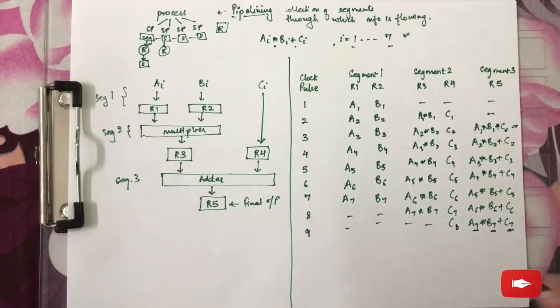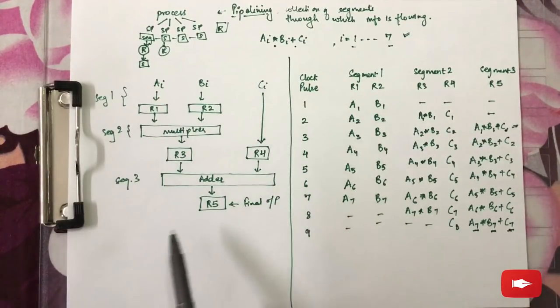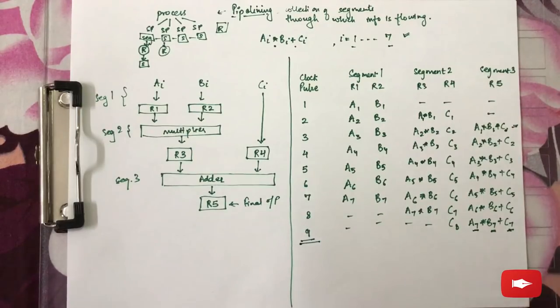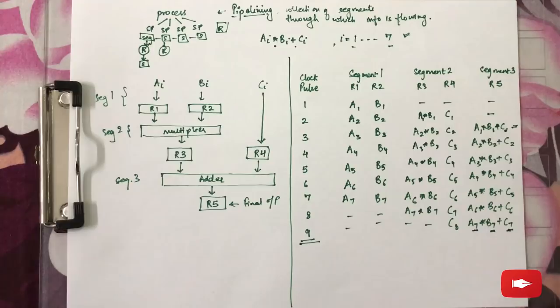We will have to obtain the result till the 7th bit for all A, B and C. And therefore, for this particular operation, it will take 9 clock pulses to get the output. So, this was all about the introduction of pipelining. Thank you.